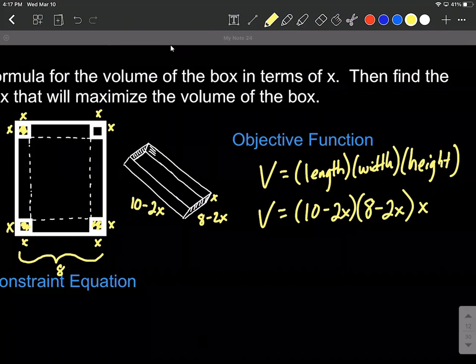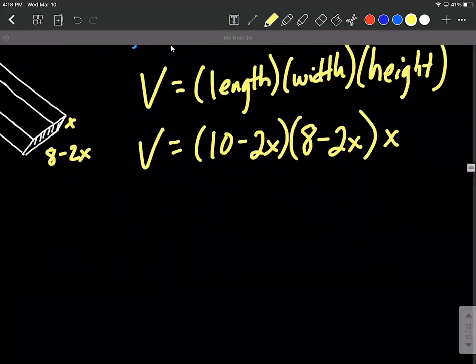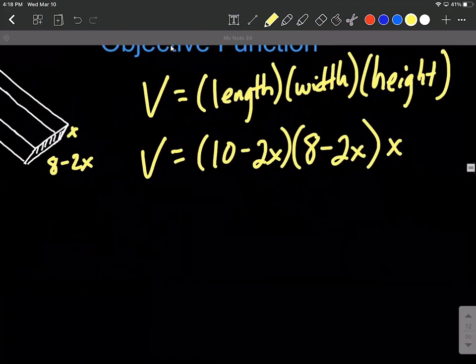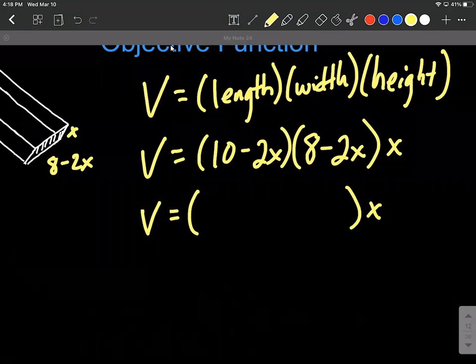But now what we want to do is we want to find the value of x that's going to maximize our volume for this box. To do so, we're going to need to take the derivative. And then we'll set the derivative equal to zero and solve down. But before we take the derivative, I think it's going to be a little bit easier if we take a few minutes and just multiply this out. So I'm going to leave the x at the end alone for right now and go first, outer, inner, last.